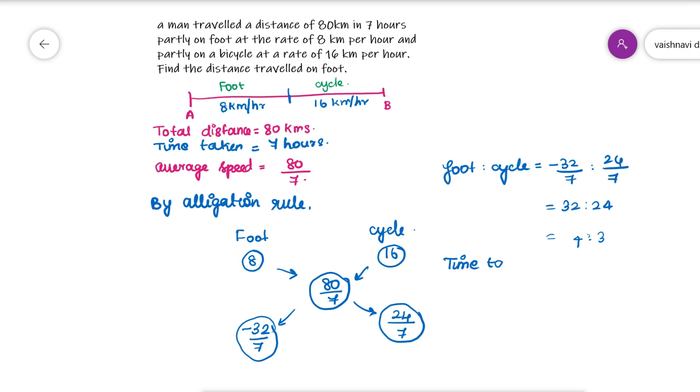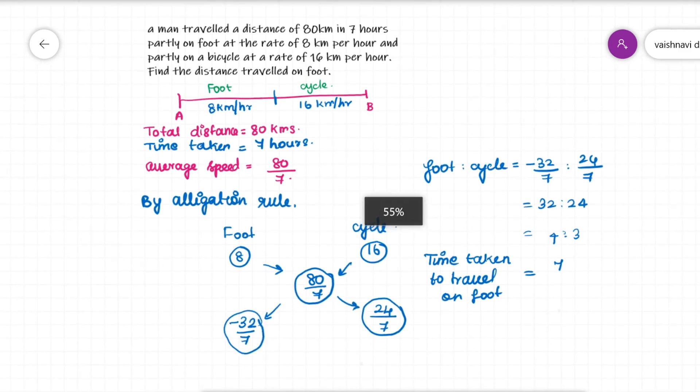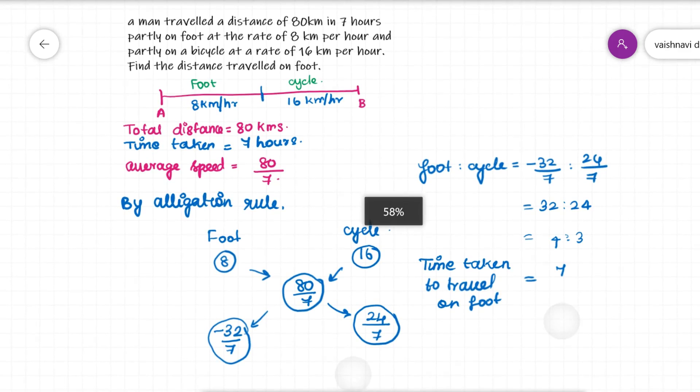The time taken to travel on foot equals 7 hours total time taken divided by 4 plus 3, into foot which is 4. Now 7 by 7 into 4 is 4 hours.